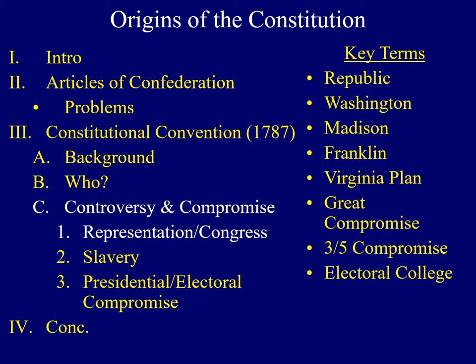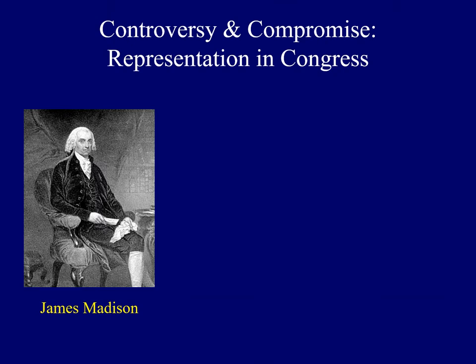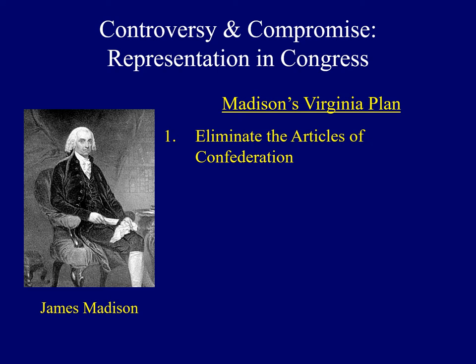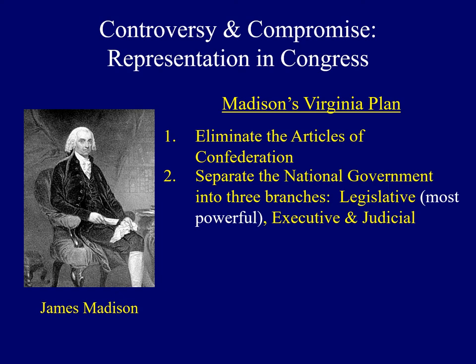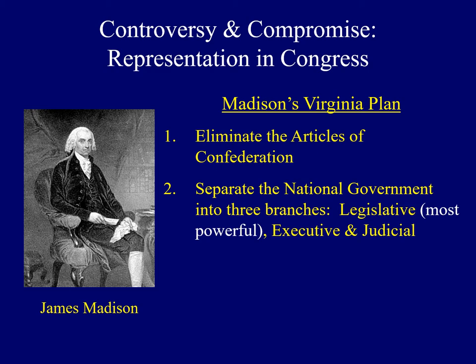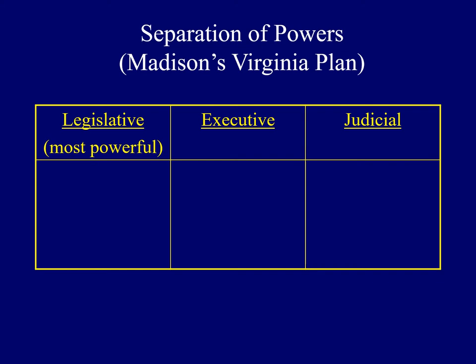Next, we'll explore the controversies and how they were resolved through compromise. The first dealt with how each state would be represented in Congress. Madison's Virginia Plan set the stage for one of the first controversies. Interestingly, the first two provisions were accepted by everyone: he called for the elimination of the Articles of Confederation, and he argued that the national government should be divided into three branches — the legislative, executive, and judicial. Madison argued that the legislative branch should be the most powerful of the three.